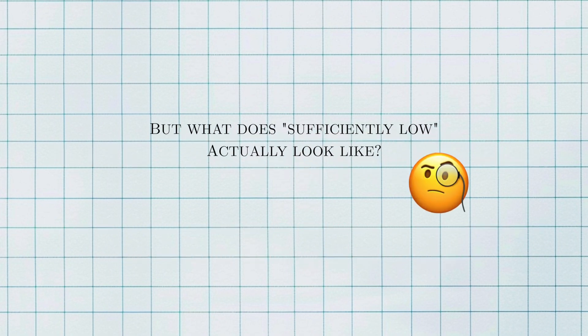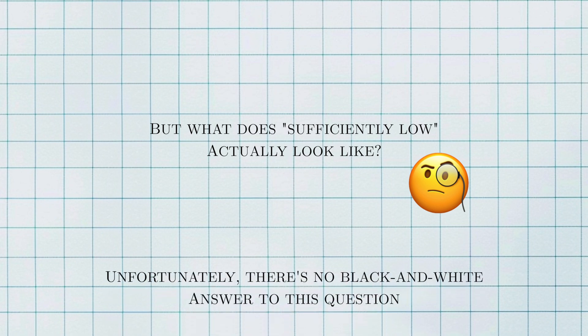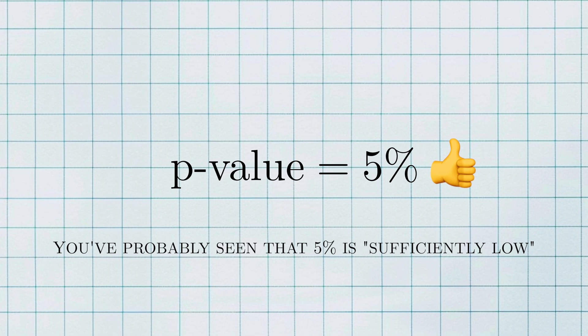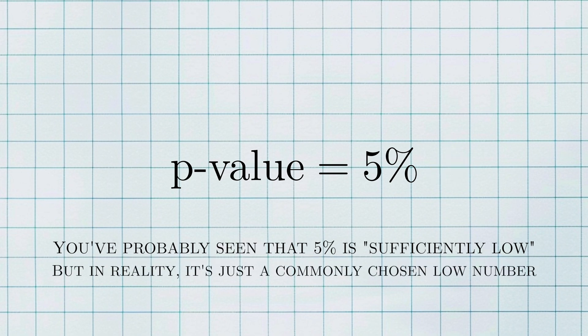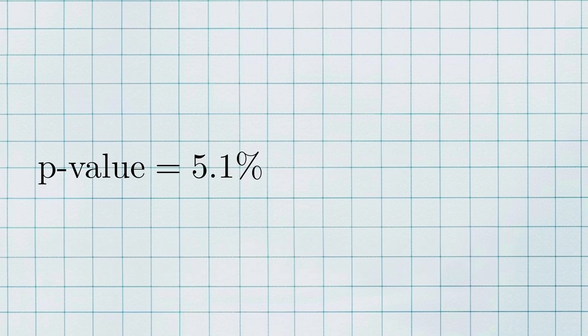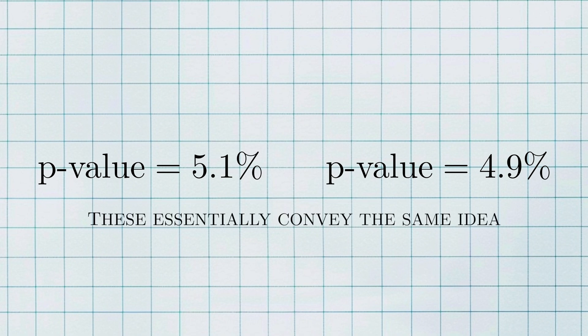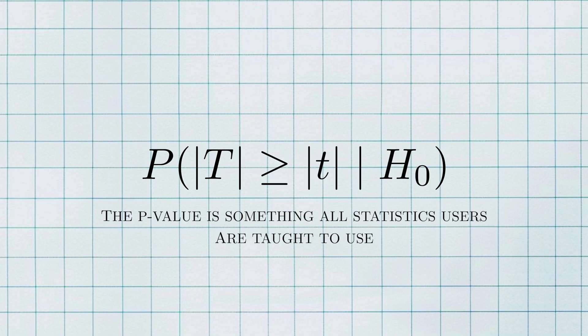But what does sufficiently low actually look like? Unfortunately, there's no black and white answer to this question. You've probably seen 5% as a quote-unquote sufficiently low number, but this particular number has no special significance other than the fact that it's kind of low. In the eyes of a statistician, a p-value of 5.1% and a p-value of 4.9% convey essentially the same idea. 5% is just some number we use as a threshold. The p-value is something that all statistics users are taught to use. It's here to stay, but you can do your part to make sure that you and others around you use it correctly.